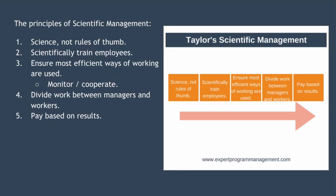The second principle is to scientifically train employees. Don't allow employees to train themselves; instead, each employee should be taught exactly how each task should be performed. Taylor didn't want employees thinking for themselves — he simply wanted a simple task performed as quickly as possible. In short, workers should be paid for doing, not for thinking.